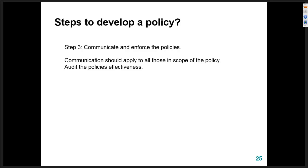Communicate and enforce the policies through a training and awareness program with periodic refreshers — at least annually as a minimum. Check effectiveness: don't just assume people recall training. Make sure training is specific to the function and data processing area. Check effectiveness through testing, scenario-based training workshops, and audit — picking a function or individual and examining how effectively the policy has been applied.